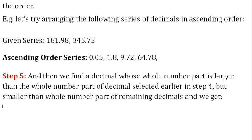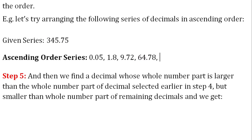Step 5: We find a decimal whose whole number part is larger than the whole number part of the decimal selected earlier in Step 4, but smaller than the whole number part of the remaining decimals. So 181.98 is written next to 64.78 in the ascending order, and we get the series: 0.05, 1.8, 9.72, 64.78, 181.98.